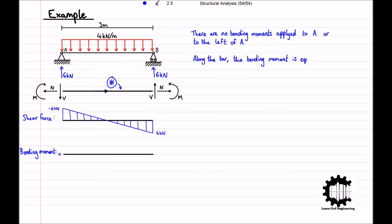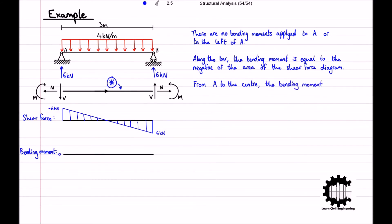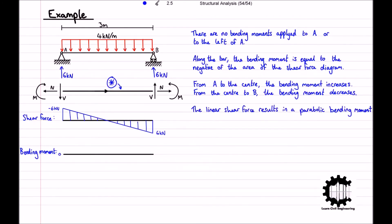Moving along the bar after point A, the bending moment is equal to the negative of the area of the shear force diagram. From A to the centre, the shear force is negative, so the bending moment increases. From the centre to B, the shear force is positive, so the bending moment decreases. Since the shear force is linear, the bending moment is parabolic. The slope of the bending moment equals the shear force: at A the slope is increasing at a rate of 6 kN, at the centre the bending moment is horizontal (shear = 0), and at B the slope is decreasing at a rate of 6 kN.